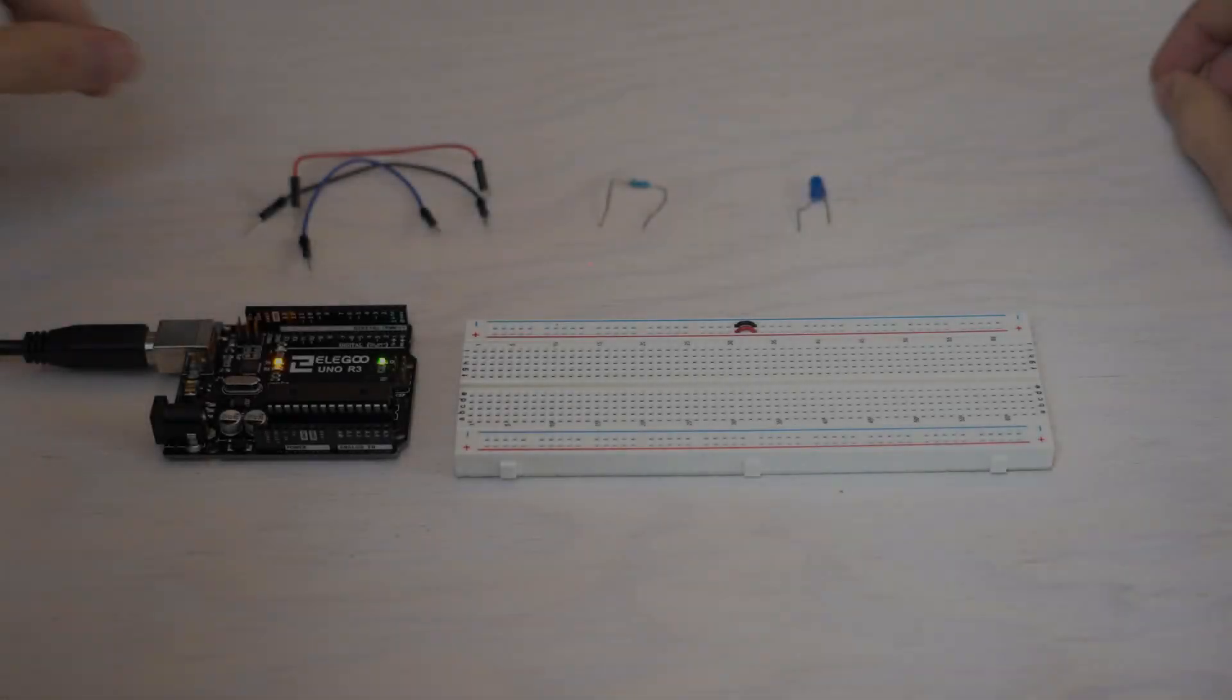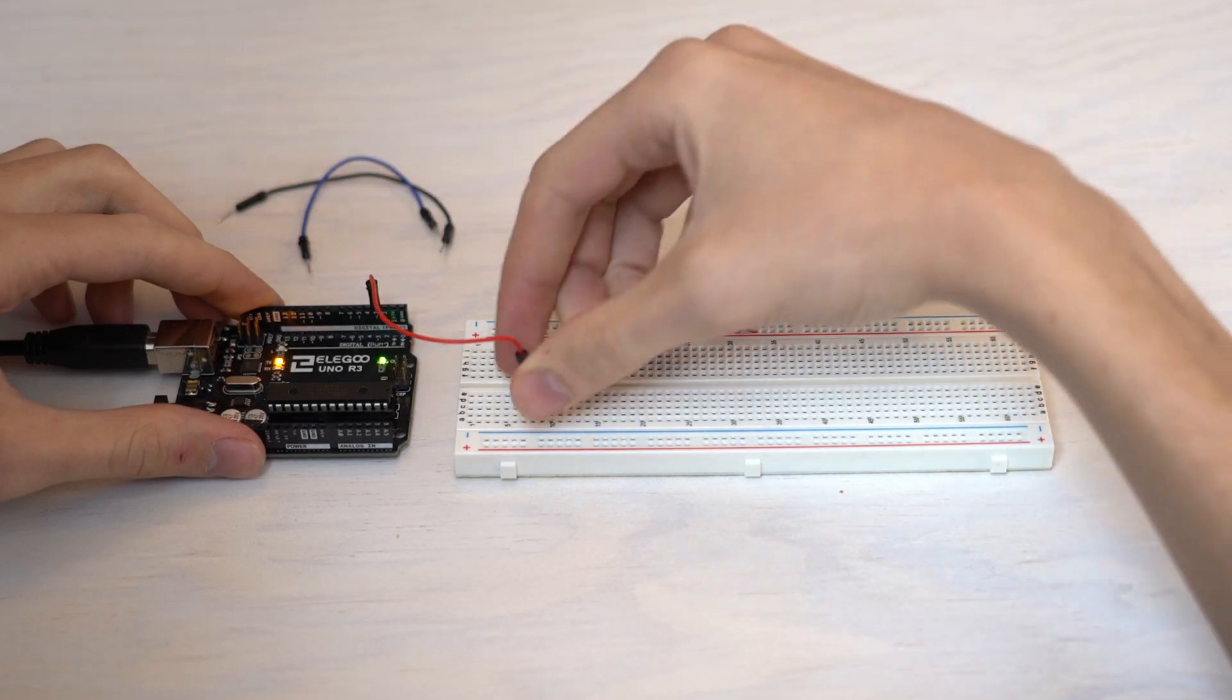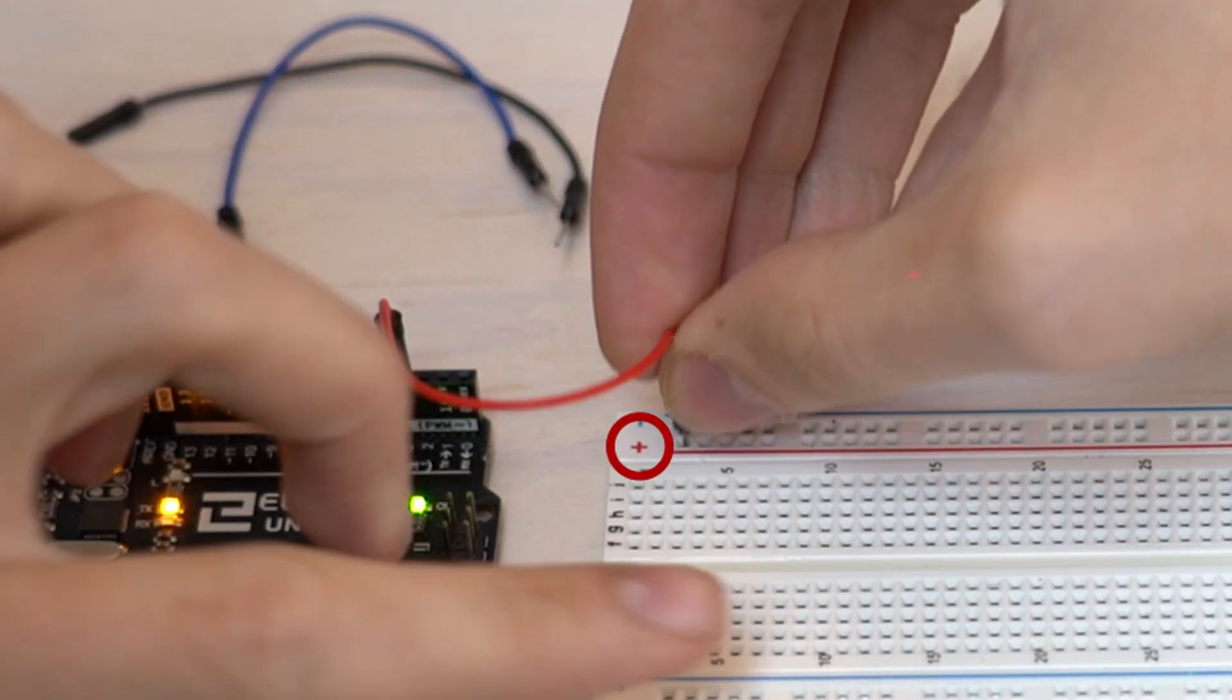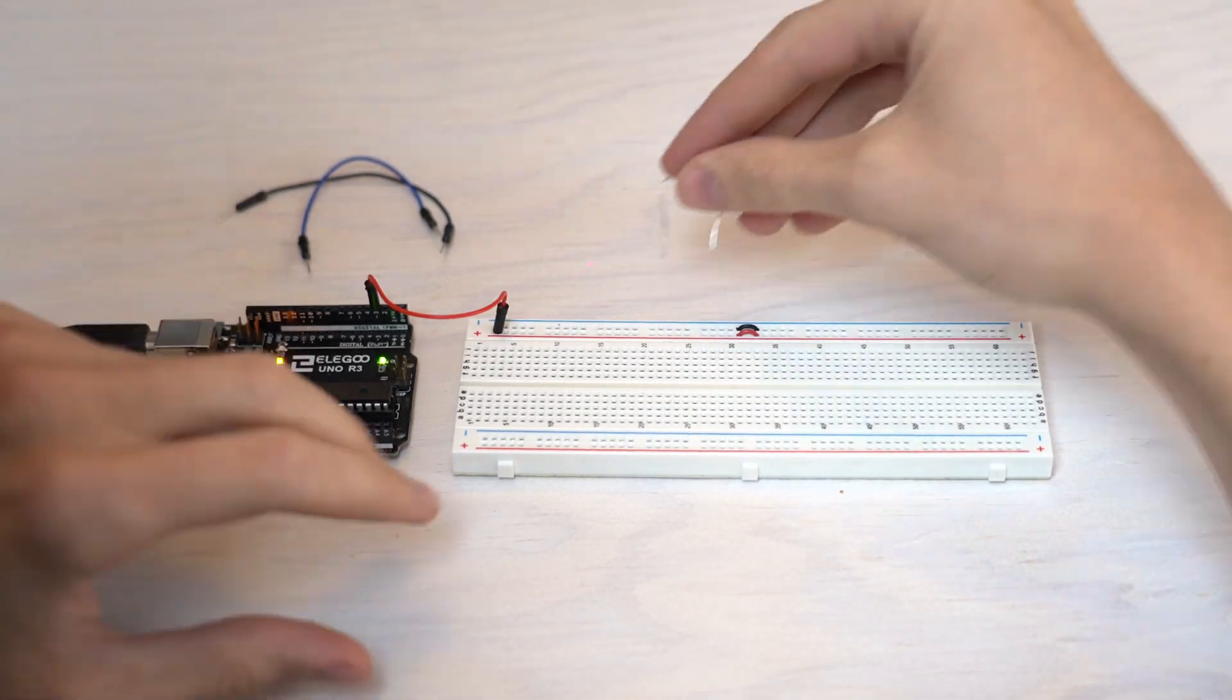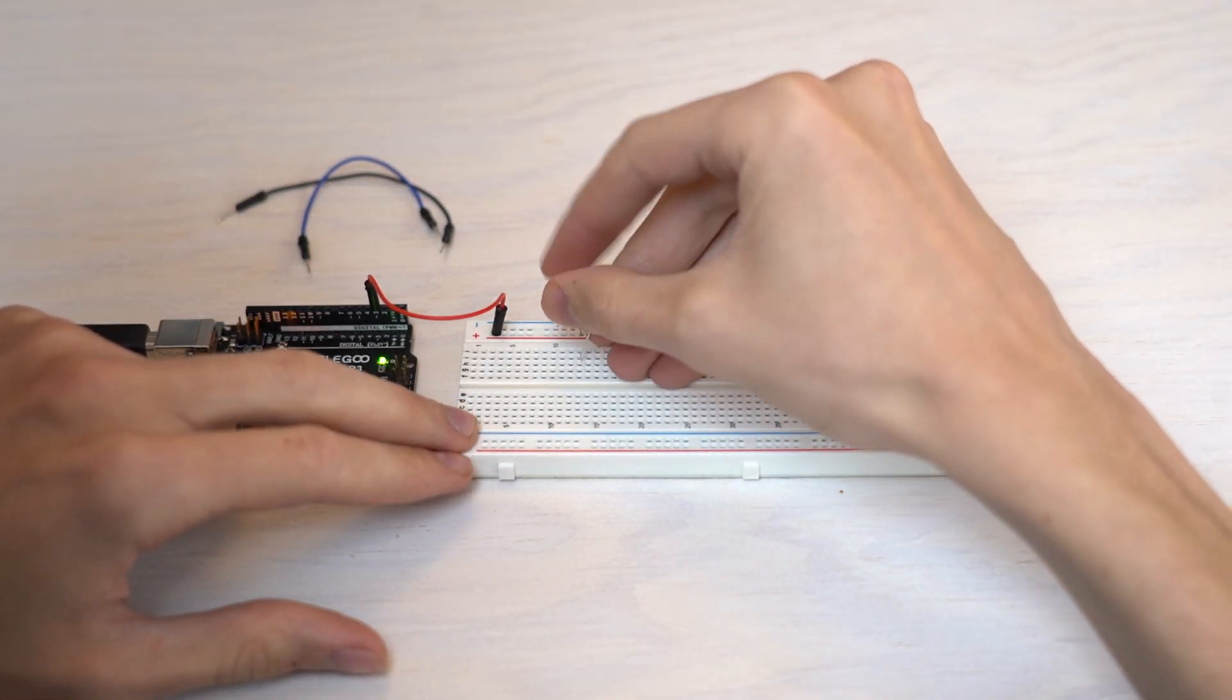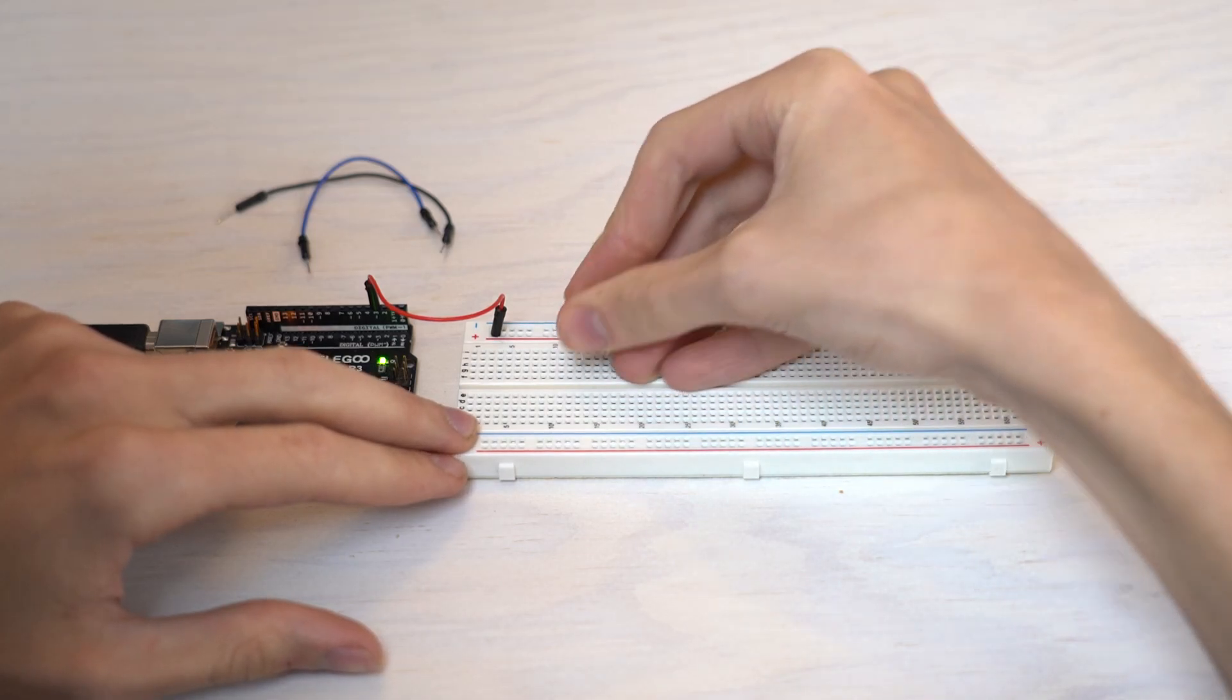The next step is to make an LED blink with MadMapper. Connect a wire to the third digital pin and to the positive pole of your breadboard. Link a resistance to this wire. It will limit the intensity of the electric current in order to protect your LED.